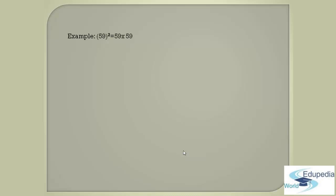Now, let us write 59 below 59 by placing a horizontal bar. This is the procedure for how we do multiplication in the traditional way — you just write the numbers. Then, according to step number one of the technique, what you have to do is multiply the digits that are in the ones place.